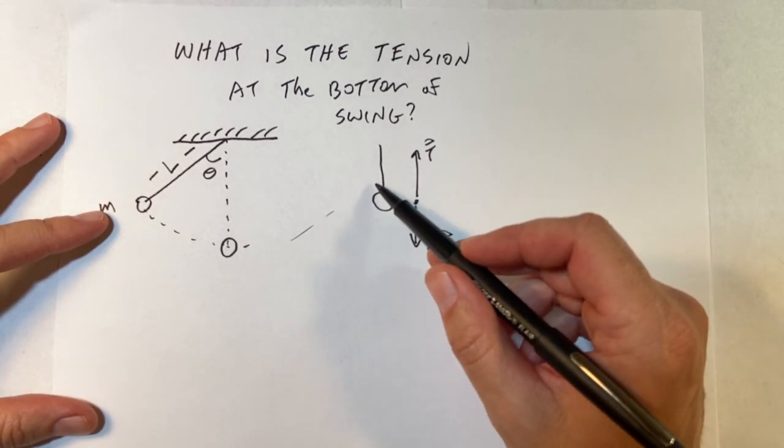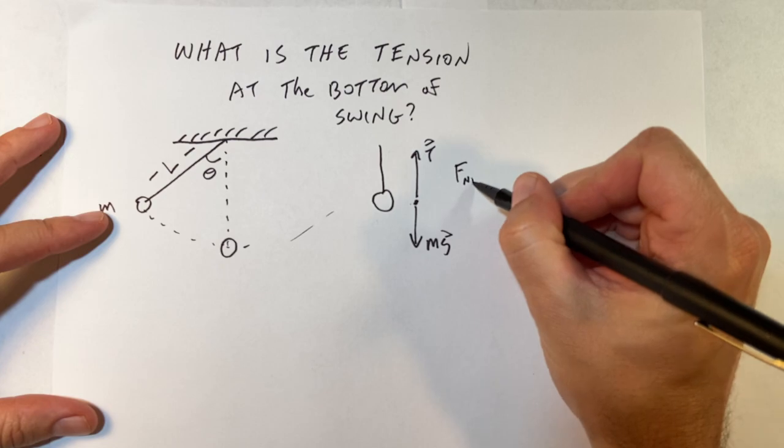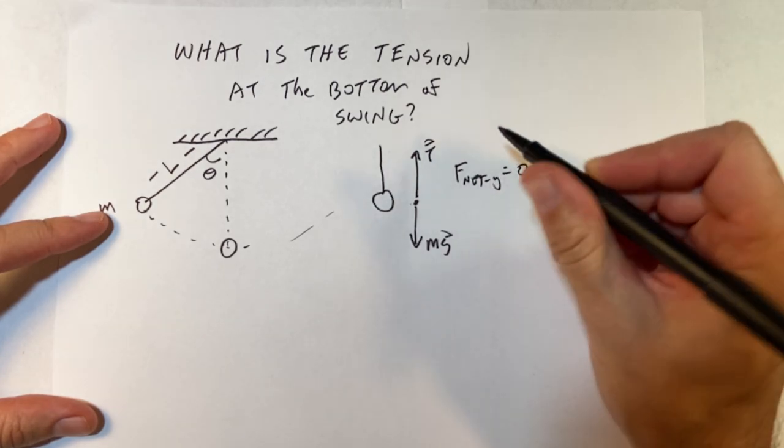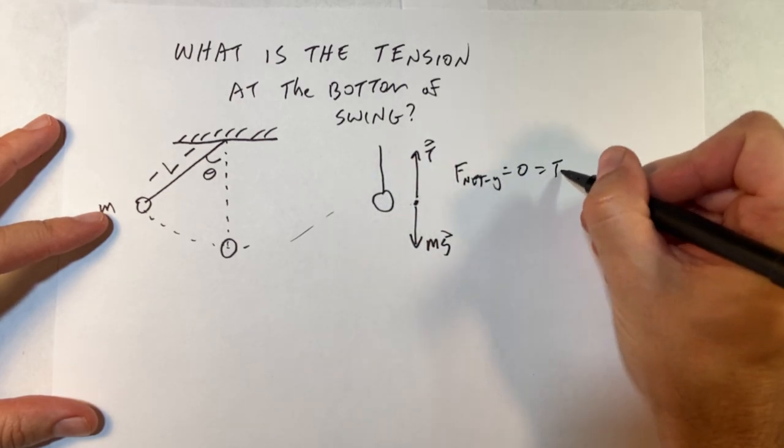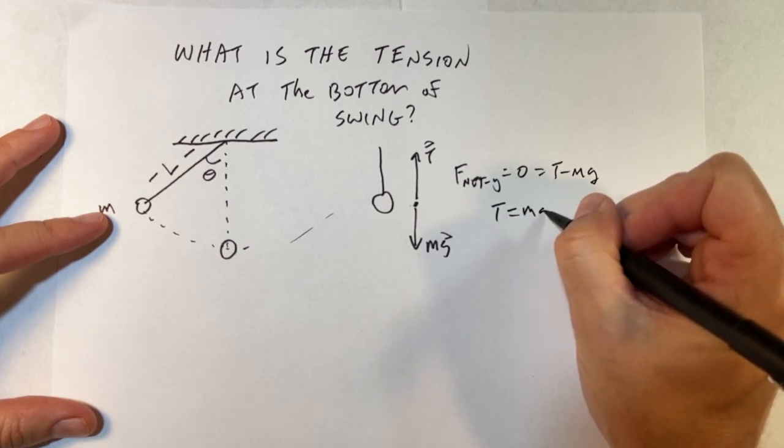So if that ball is just hanging there, it's not swinging, then I know that the net force in the y direction is equal to zero because the change in momentum, the acceleration is zero. So that means that I have T minus mg equals zero and the tension is equal to mg. That's easy.